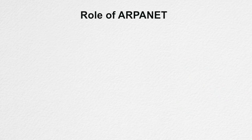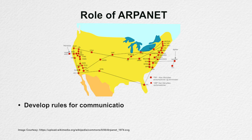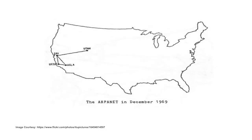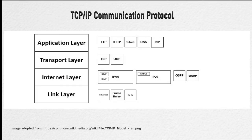The major task ARPANET had to play was to develop rules for communication, that is protocols for communicating over ARPANET. ARPANET in particular led to the development of protocols for internetworking, in which multiple separate networks could be joined into a network of networks. This resulted in the development of TCP/IP protocols, which specifies the rules for joining and communicating over ARPANET.